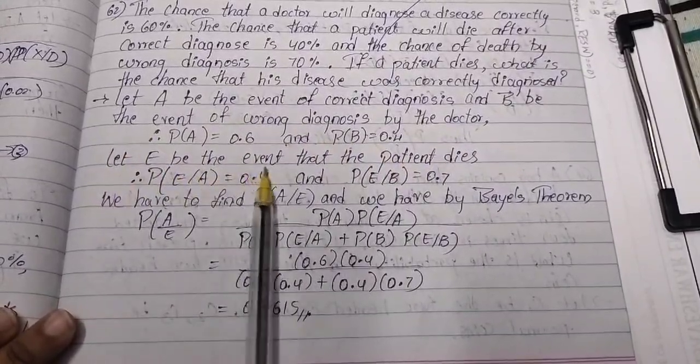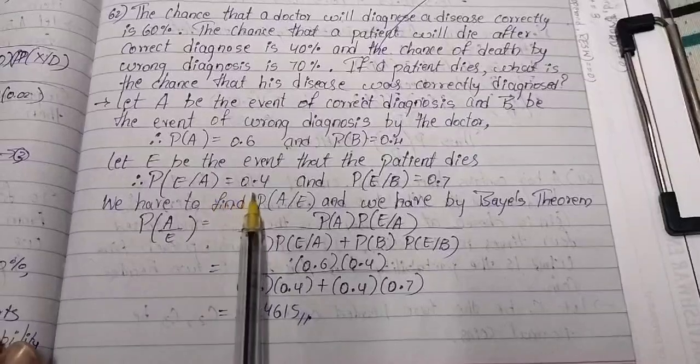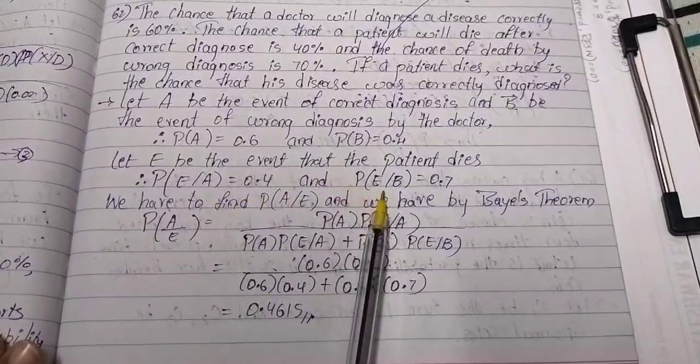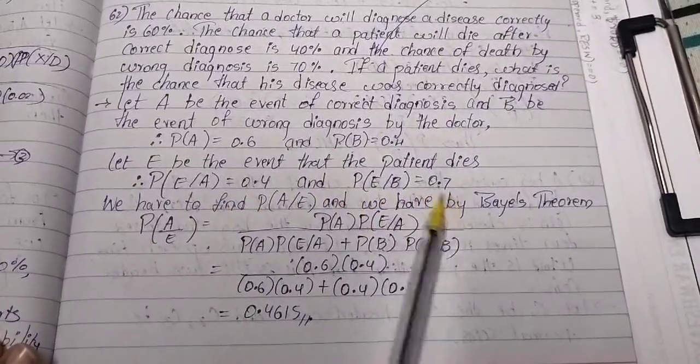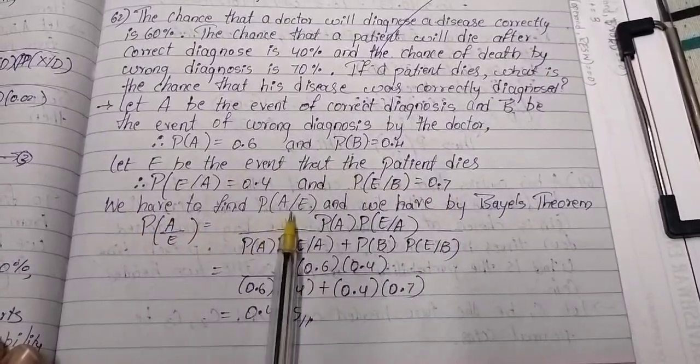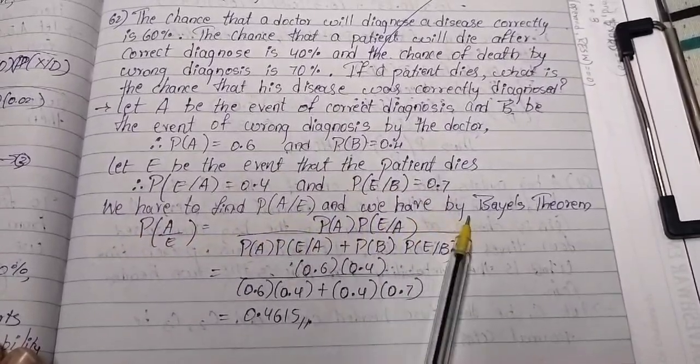Let E be the event that the patient dies. P(E|A) = 0.4 and P(E|B) = 0.7. We have to find P(A|E) and we have the Bayes theorem.